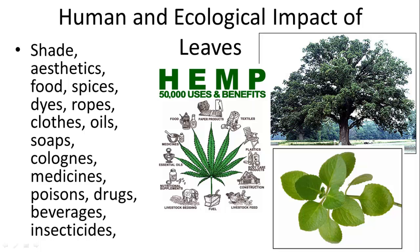For example, hemp is used for a lot of different things. It can be used to make biodegradable plastics, ropes, and it has medicinal purposes as well as illicit drug use purposes. We also have other plants used for seasonings, foods, soaps, colognes, and medicines — so many different things that we rely on from their leaves.